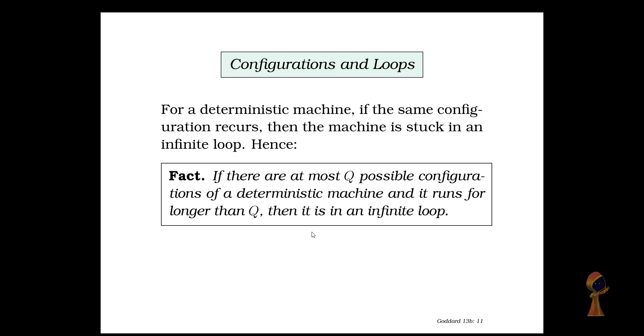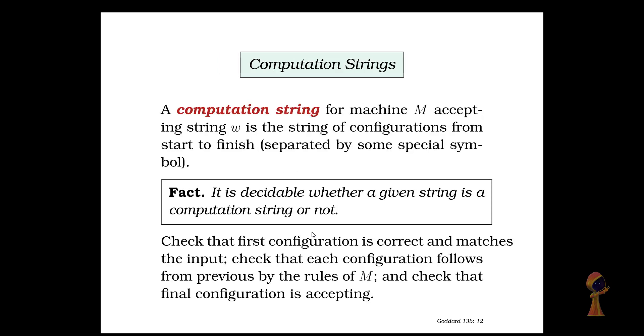If the machine is deterministic and the same type of configuration occurs again, that means we are in an infinite loop. If there are at most Q possible configurations, if it runs for longer than Q then that means it is an infinite loop.